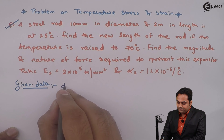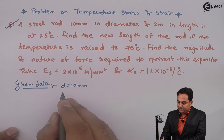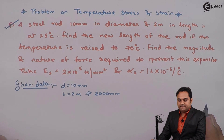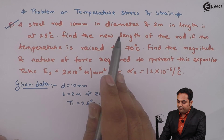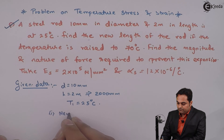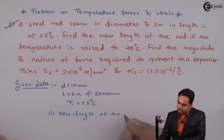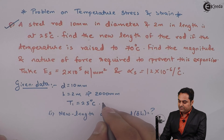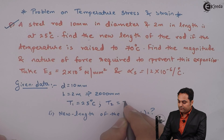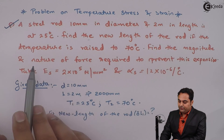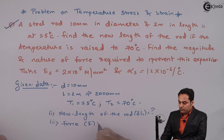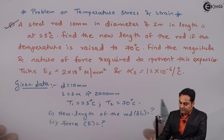A steel rod 10 mm in diameter (D = 10 mm) and 2 meters in length (L = 2000 mm) is at an initial temperature T1 = 25 degrees Celsius. We need to find the new length of the rod (Delta L1) if the temperature is raised to 70 degrees Celsius, and also the magnitude and nature of the force required to prevent this expansion.